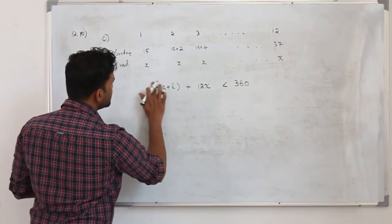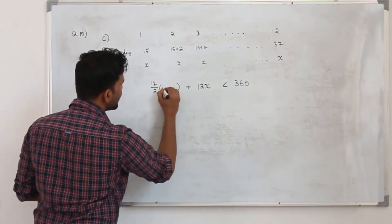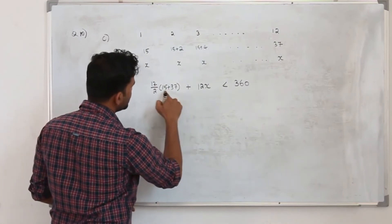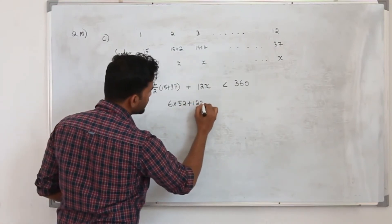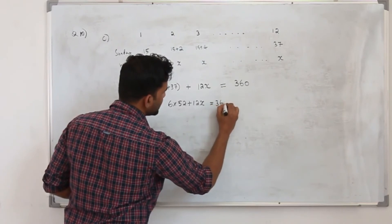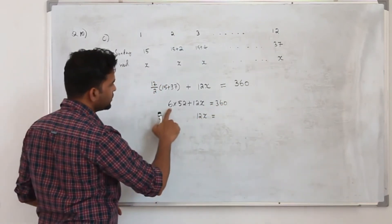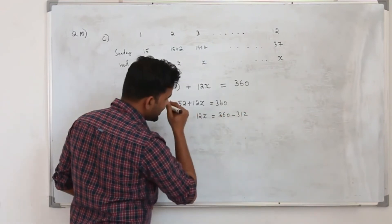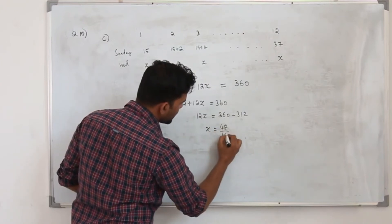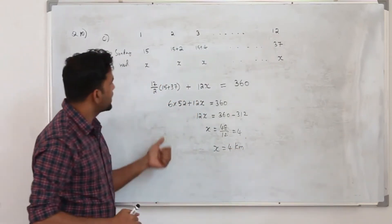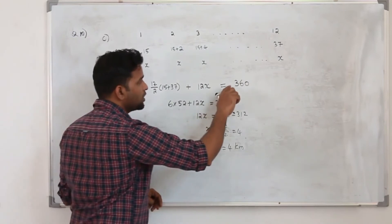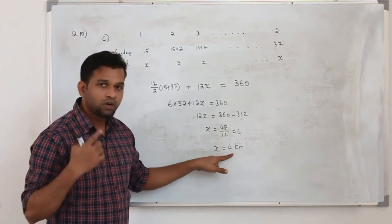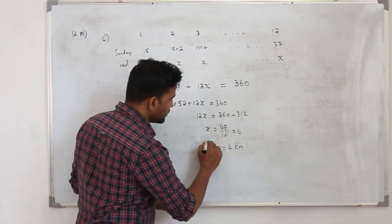The number of terms is 12, first term is 15, last term is 37. So the Sunday sum is 6 times 52, which equals 312. Setting 312 plus 12x equal to 360 gives 12x equals 48, so x equals 4 km. He can run 4 km every Wednesday, and if he runs more than 4 km it will exceed 360. So x equals 4 km is the maximum value under training plan A.